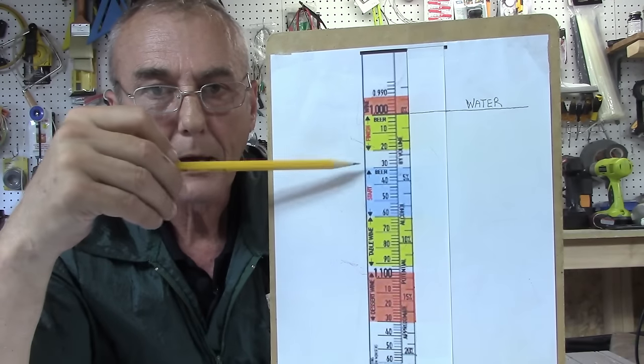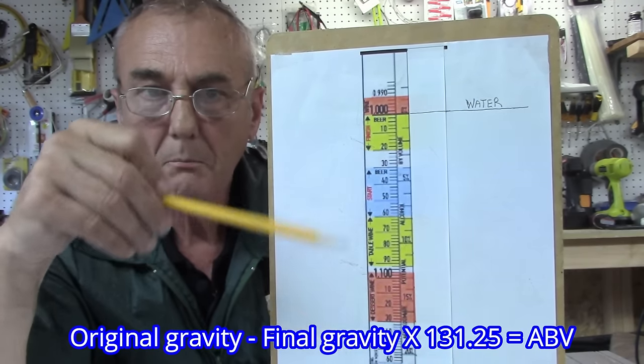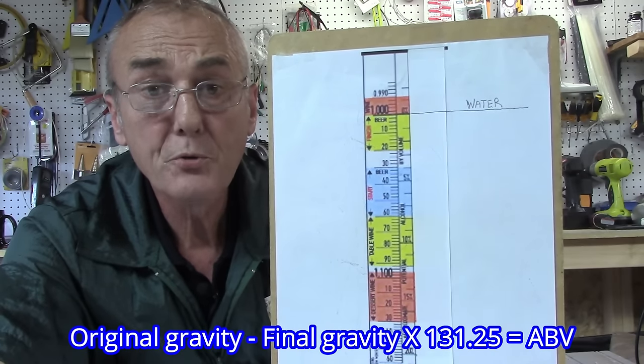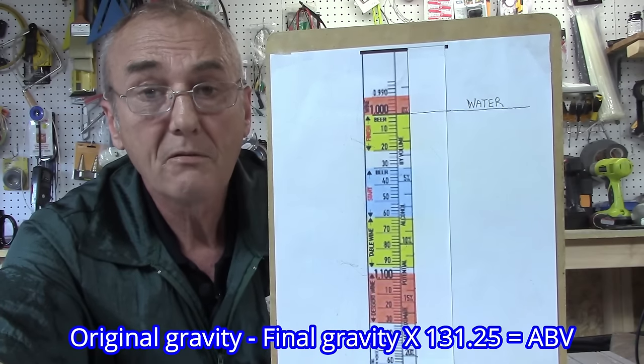Now if you're using the gravity scale, you can do it the longhand method: original gravity minus final gravity times 131.25 equals alcohol by volume.